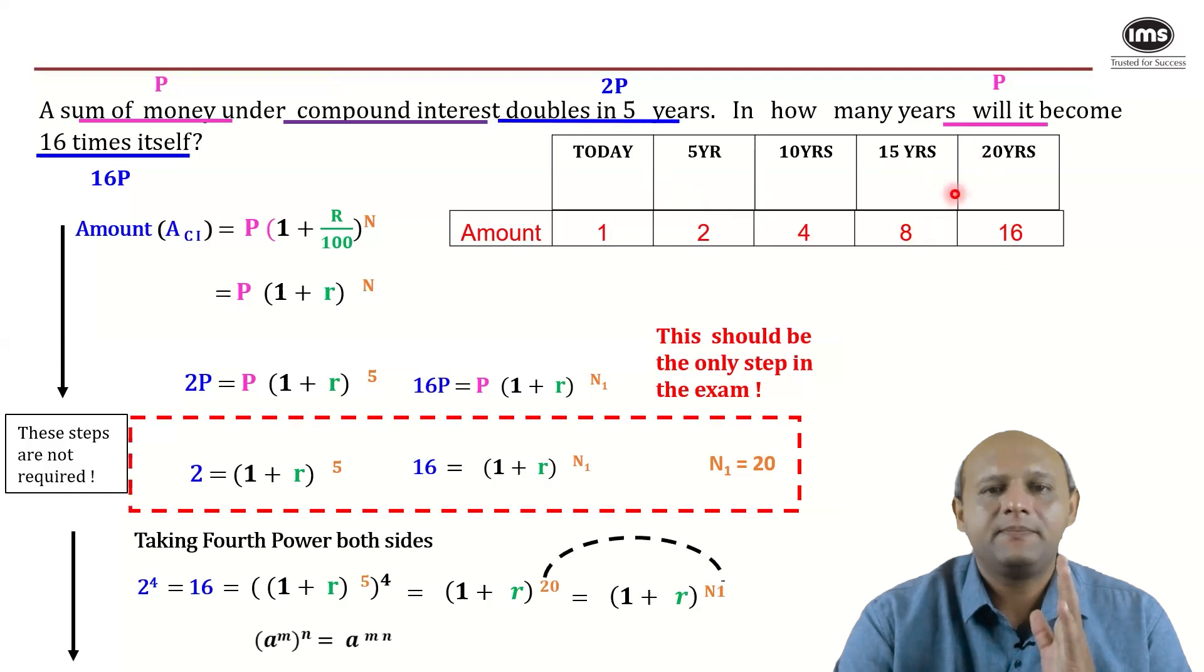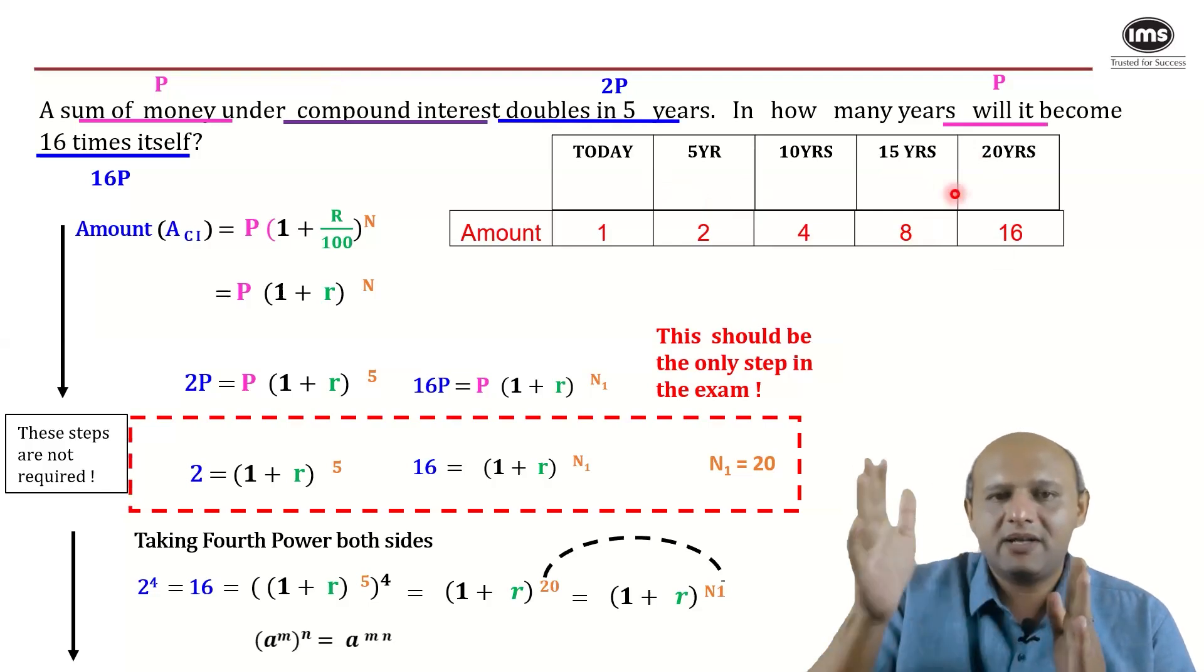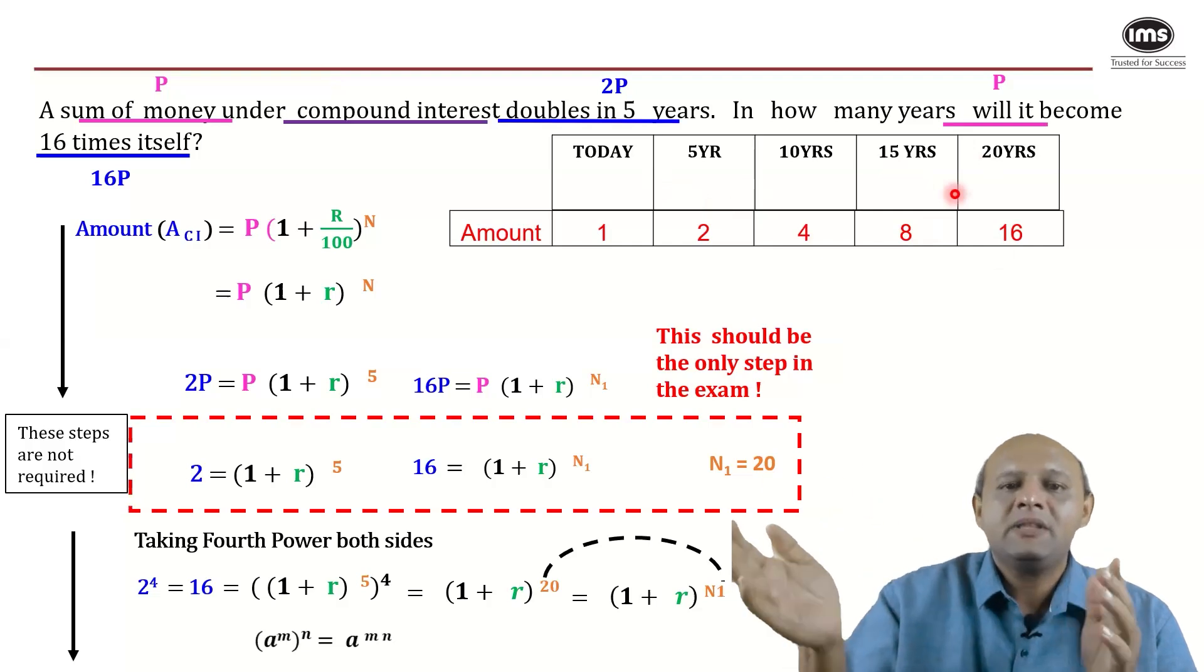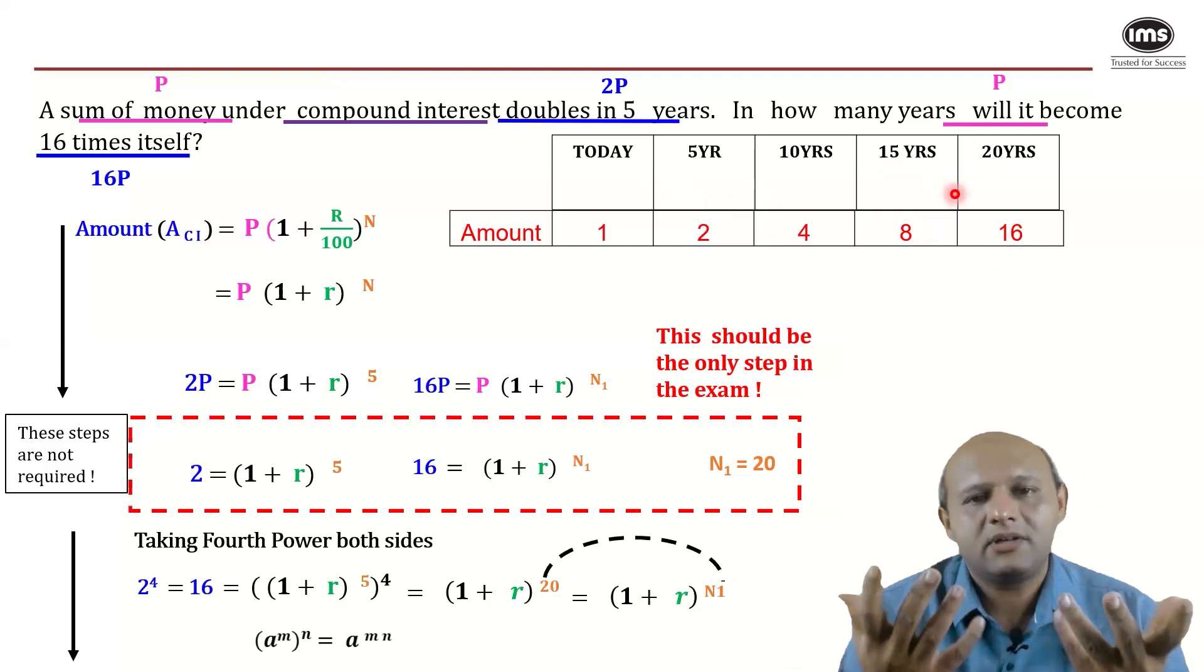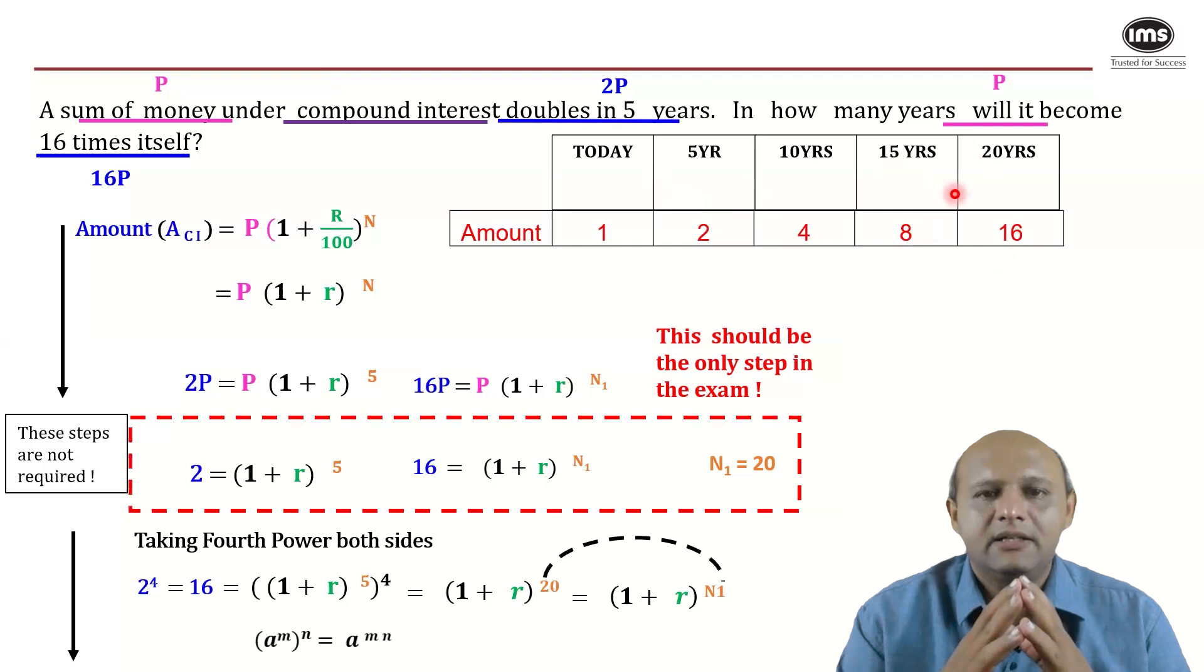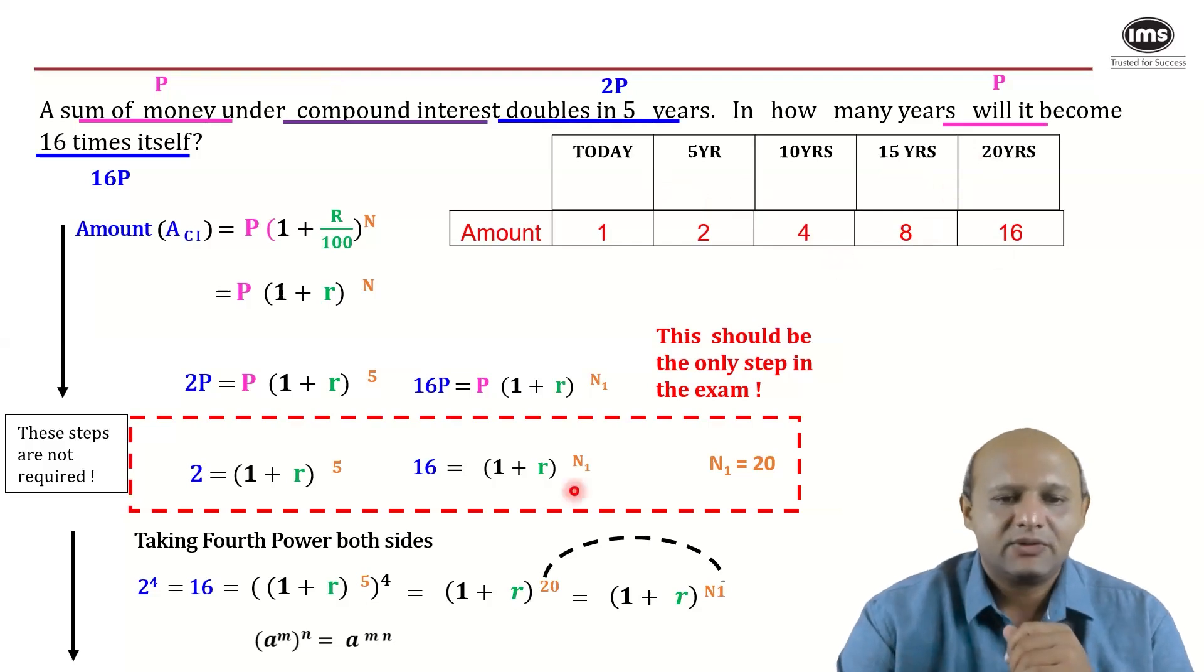That's all one needs to understand - that the time period progresses in an arithmetic progression: 0, 5, 10, 15, 20, and the amounts are in a geometric progression. As simple as that. If you're able to relate with this kind of concept, then all of this perhaps is not required.